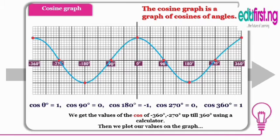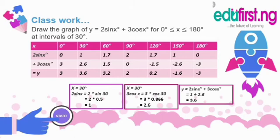Let's take a quick look at our classwork for today. This is very simple. It says, draw the graph of y equals 2 sine x plus 3 cos x. That is the equation. Then it says, for 0 degrees less than or equal to x less than or equal to 180 degrees at intervals of 30 degrees.